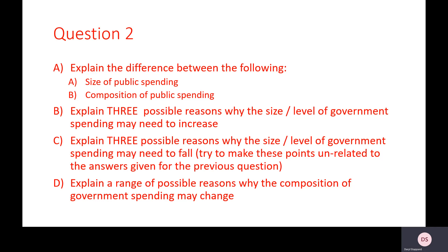Another pause question: a) Explain the difference between the size and composition of public spending; b) Explain three reasons why the level of government spending may need to increase; c) Explain three reasons why the level of government spending might need to fall — try to make these unrelated to the ones in b; d) Explain a range of reasons why the composition of government spending may need to change. Hit pause, write down your answers, and when you're happy hit play.